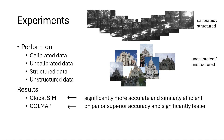To show the effectiveness of GLOMAP, we conduct experiments on both calibrated and uncalibrated datasets, which also contain both structured and unstructured input. In summary, compared to other global SfM methods, we achieve significantly more accurate results while being similarly efficient. Compared to the widely used software COLMAP, GLOMAP demonstrates on-par or superior performance while being orders of magnitude more efficient.